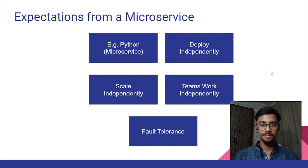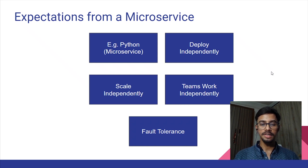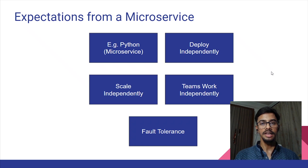Fourth, in an organization there are different teams, and each team could be a manager of a particular microservice. When a team works on their microservice, there should not be any dependency on any other team which is managing some other microservice. Fifth, in case a microservice suddenly fails, it should not have any impact on any other microservice — the other microservices should be up and running.